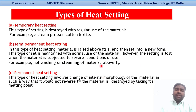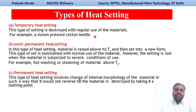There are different types of heat setting. The first is temporary heat setting, where the setting is destroyed with regular use of the material. For example, if you are ironing your cloth or steam pressing your clothes, whatever setting has been done is destroyed over the period of use. So that is not a permanent one.